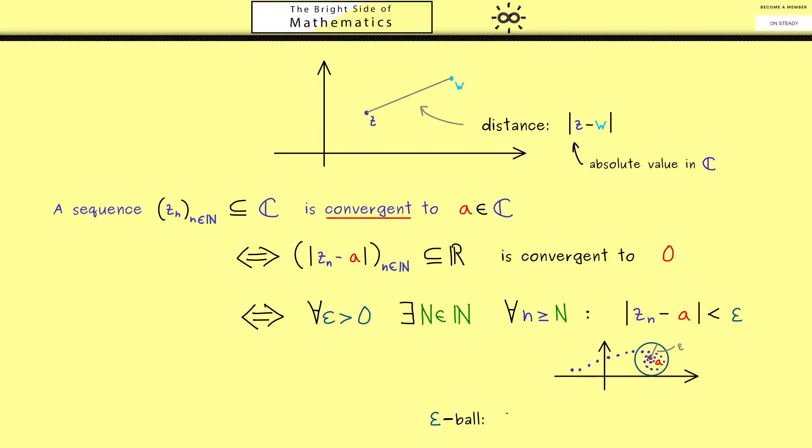Because this picture is so important, we call the inside of the circle an epsilon ball. For the notation we use a capital B with index epsilon. The middle point a we put into parentheses afterwards. By definition this is the set of all complex numbers w with the property absolute value of w minus a is less than epsilon.